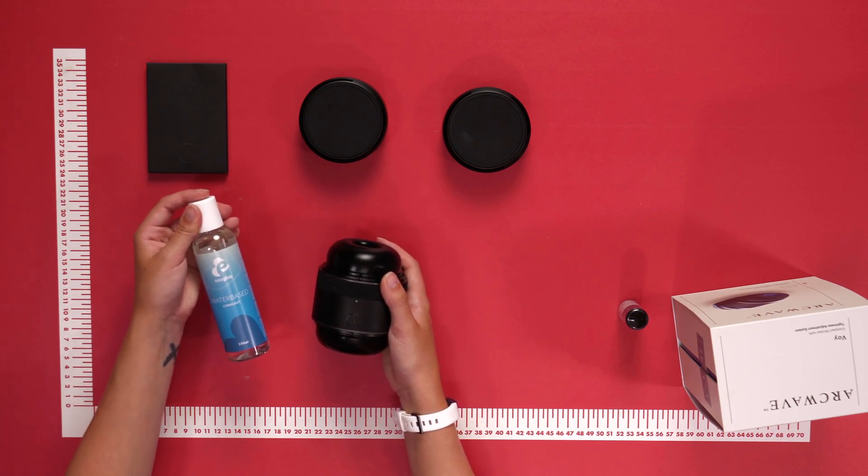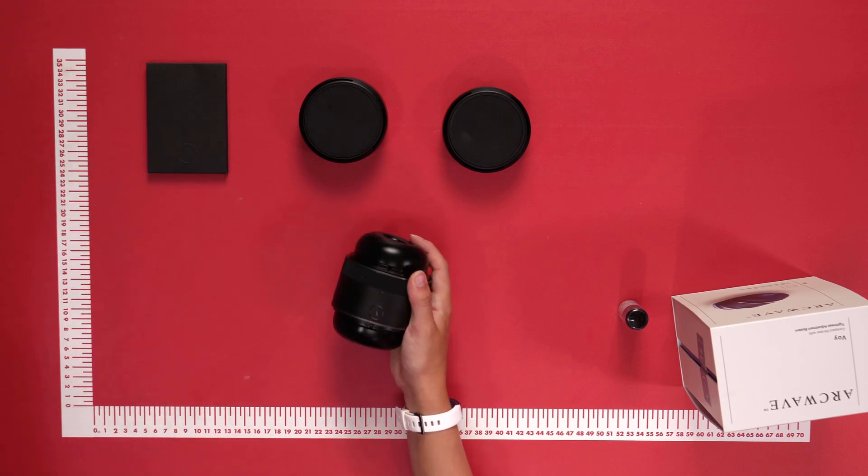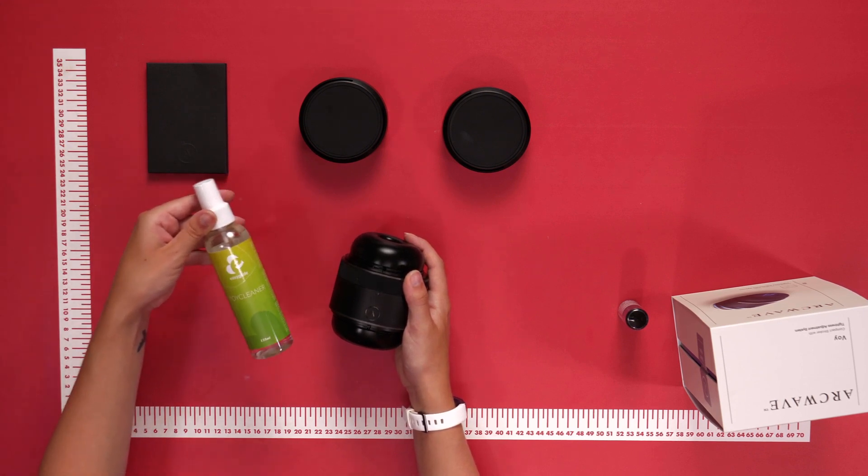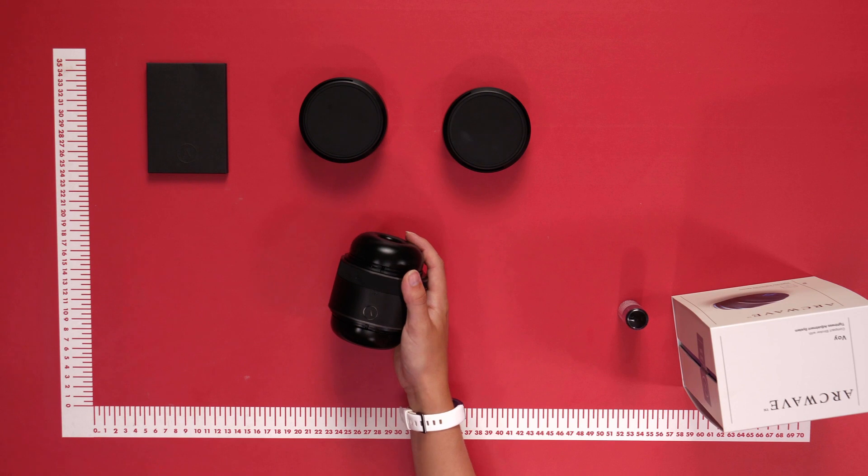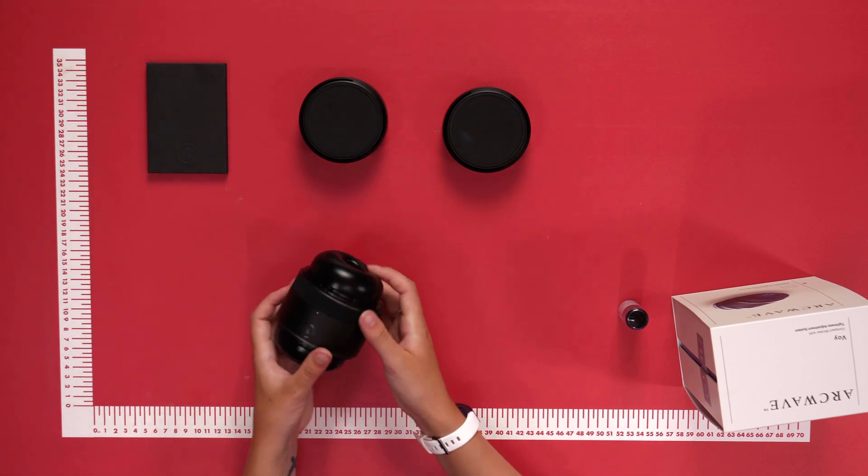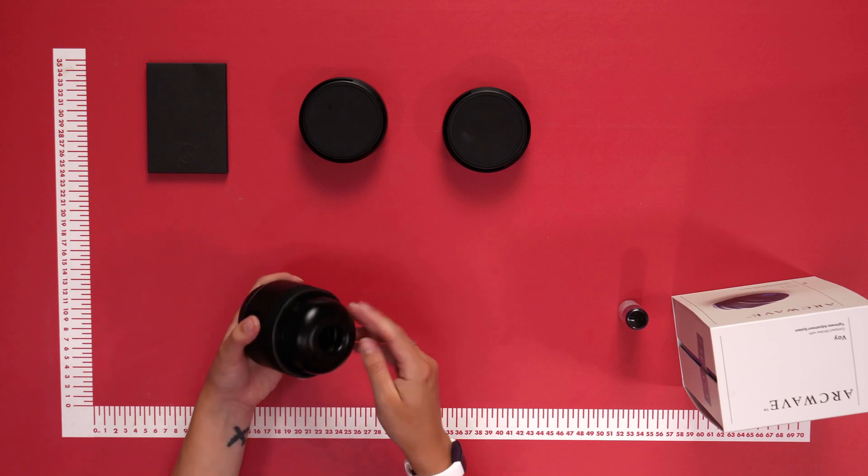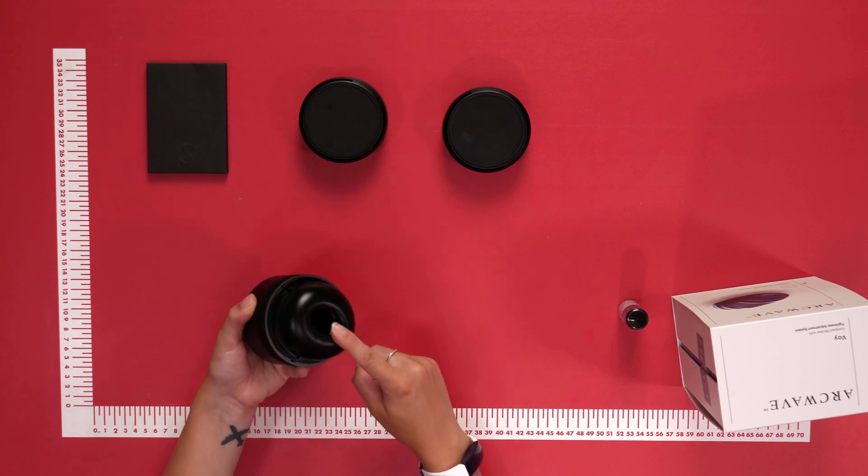Please make sure to clean after every use. For this, we would recommend using a toy cleaner and lukewarm water. Alternatively, you can also use a mild antibacterial soap and lukewarm water. The sleeve is removable from the masturbator itself. Make sure it's completely dry before using again.